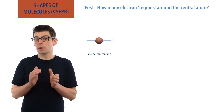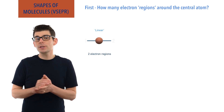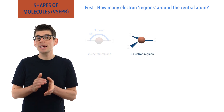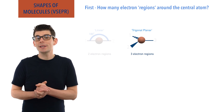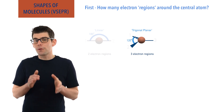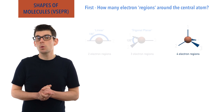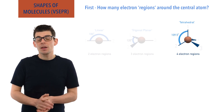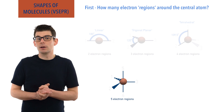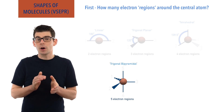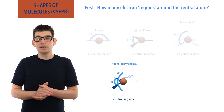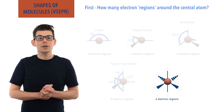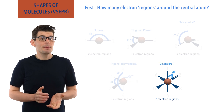For two electron regions they will arrange themselves in a linear way with 180 degrees between each region. For three electron regions they will arrange themselves in a trigonal planar arrangement with 120 degrees between each region. For four electron regions they will arrange themselves in a trigonal bipyramidal arrangement with 180 degrees and 120 degrees between each region. And for six electron regions they will arrange themselves in an octahedral arrangement with 90 degrees between each region.